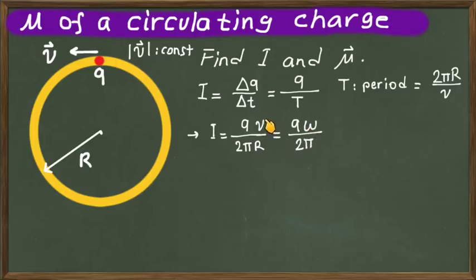we can write the current in terms of angular velocity as I = qω/(2π), because angular velocity and linear speed are related by ω = v/r.